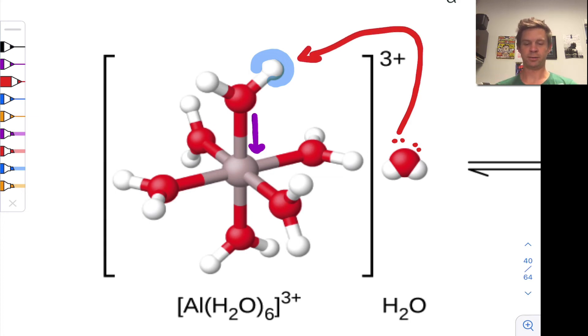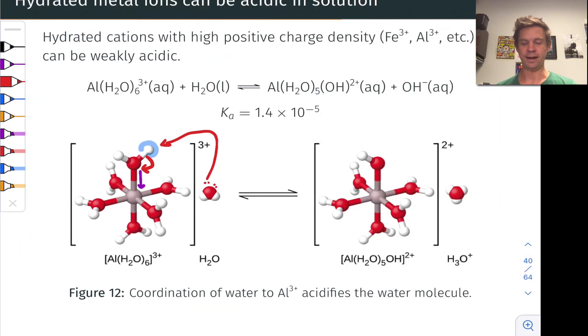And the resulting product you can see here is hydronium ion, as well as the conjugate base of the metal complex with a new hydroxide anion in there derived from the water that lost a proton, and the remaining five waters still there. And notice that the charge has changed.